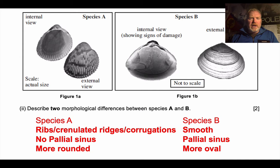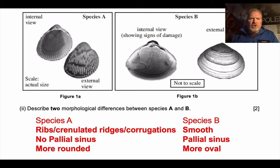There's no palleal sinus on Species A; there is one on Species B. Species A is more rounded — the length and width are more similar. Species B is a bit more oval — the length and width are a bit more different. I'm sure there are other differences you can come up with; any other reasonable suggestions would probably be acceptable.